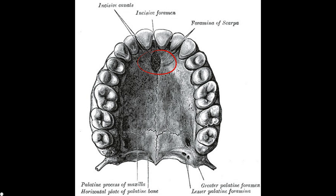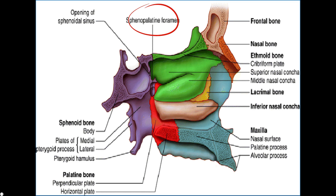As you can see in this picture of the incisive foramen, from posterior to anterior, the nasopalatine nerve travels up to the incisive foramen to supply the upper anterior teeth and the anterior hard palate area. Not only the nasopalatine nerve passes through this small point — the nasopalatine artery, also referred to as the sphenopalatine artery, passes through as well. Both the nasopalatine nerve and nasopalatine artery enter the nasal cavity via the sphenopalatine foramen, as shown in this picture of its exact location.